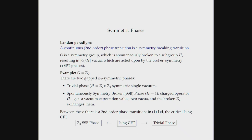G is a symmetry group and it can be spontaneously broken to a subgroup H, and then there'll be G mod H many vacua, and the broken symmetry acts on these. That's the canonical picture. When you take G equals Z2, there are two phases: one is a trivial phase where you have a single vacuum and the symmetry acts trivially — that's the case when H is Z2 — and then there's the spontaneously broken phase when I have two vacua and the broken symmetry acts between these.